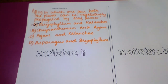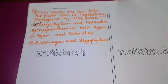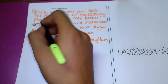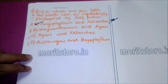The next question is: in which pair can both plants be vegetatively propagated by leaf pieces? Option A: Bryophyllum and Kalanchoe. Option B: chrysanthemum and agave. Option C: agave and Kalanchoe. Option D: asparagus and Bryophyllum. The answer is option A — Bryophyllum and Kalanchoe — and it is very important to remember these names.